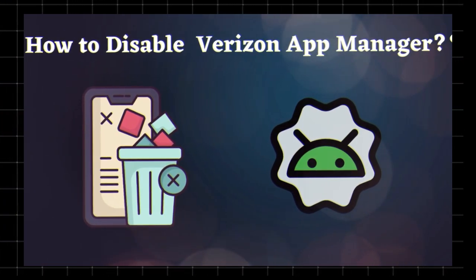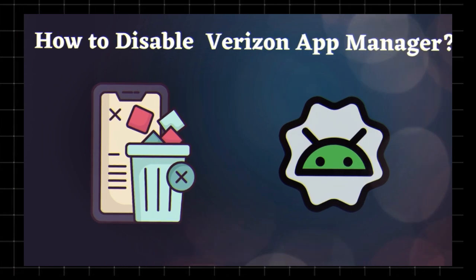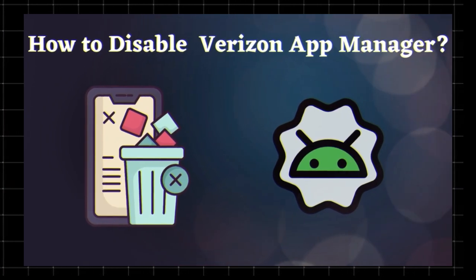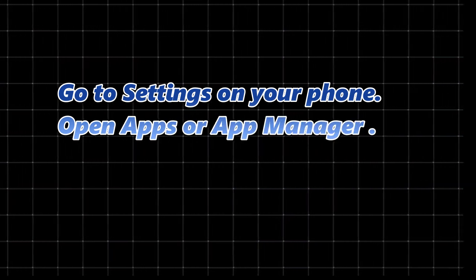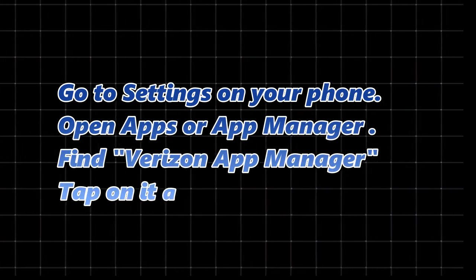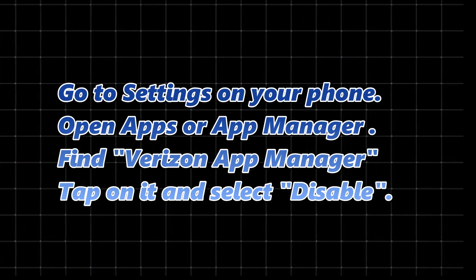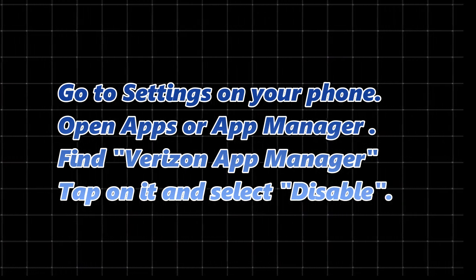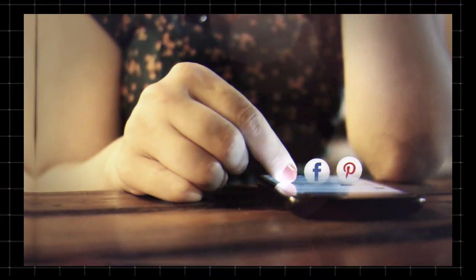If you don't want Verizon App Manager on your device, here's how to disable or remove it. Go to Settings on your phone, open Apps or App Manager (varies by device), find Verizon App Manager in the list of installed apps, tap on it, and select Disable or Uninstall Updates if available.